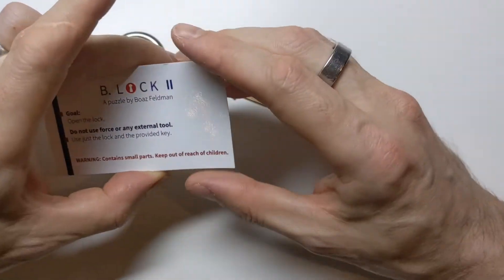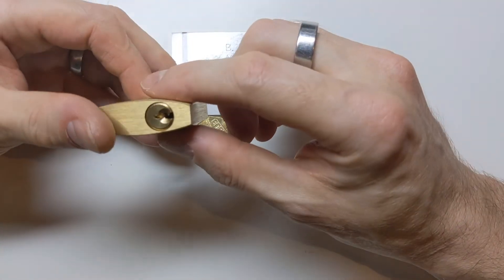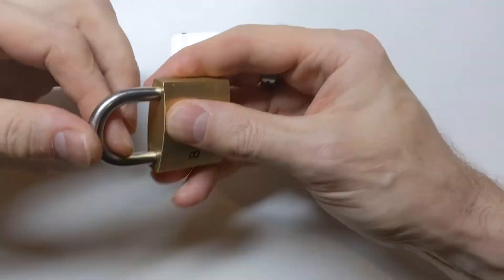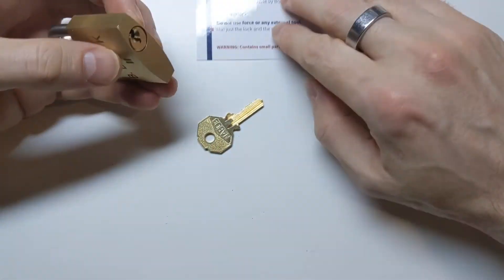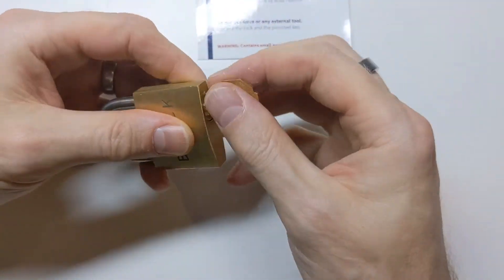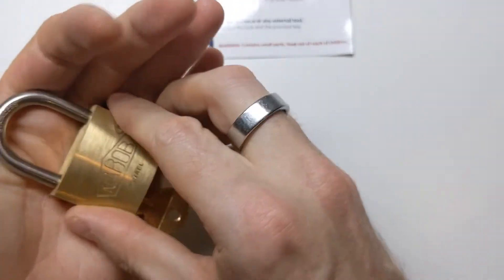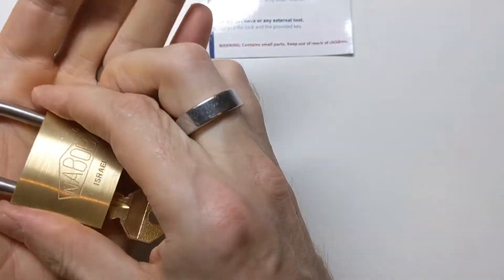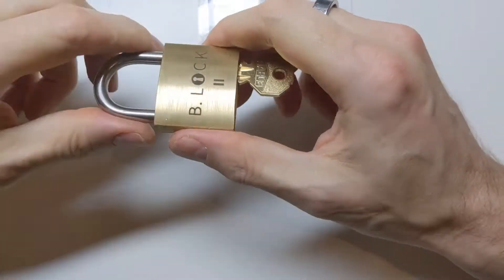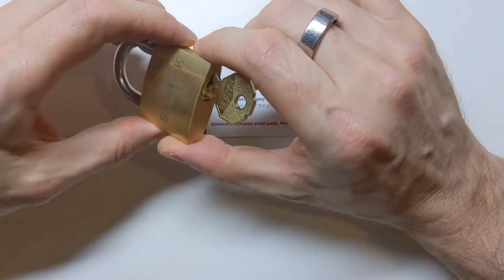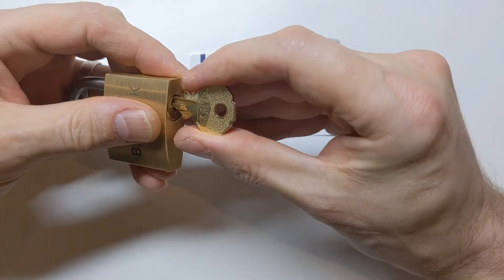Contains small parts, keep out of reach of children. Does that mean some small part is going to come out? Am I going to end up gutting this and the pins are all going to come out? Maybe. I really want to press down on the shackle and have something happen. Well, I have got to hand it to Boaz Feldman. This is a very difficult puzzle.